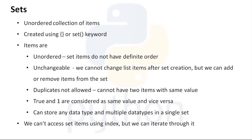Now we have sets — the next sequence type, similar to tuples and lists. Sets are basically an unordered collection of items. You may have come across sets during high school mathematics — this is the same concept. Items in a set are unordered, so there is no specific or definite order.